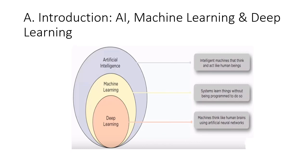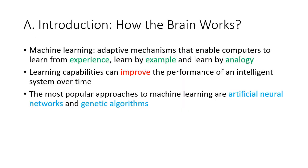In the diagram on artificial intelligence, machine learning, and deep learning, we will currently be discussing machine learning, which refers to systems that learn things without being explicitly programmed to do so. Machine learning is a type of adaptive mechanism which enables computers to learn from experience, by example, and by analogy. It improves its performance over time, and the most popular approaches to machine learning are artificial neural networks and genetic algorithms.